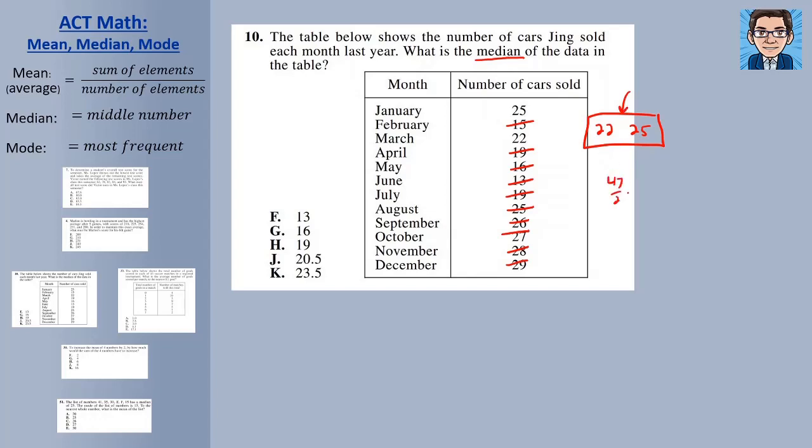We could add these together. 47 divided by 2, take the average, and we're going to get 23.5 is our middle.